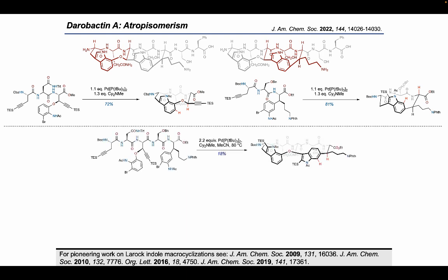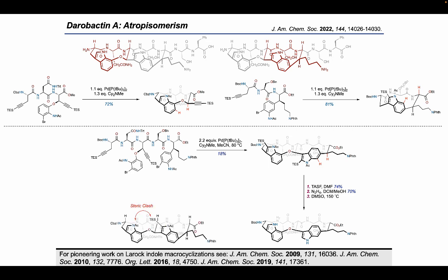Similarly, using the deshydroxytripeptide linear precursor, the eastern macrocycle was closed via LORAC-indole synthesis in excellent yield as a single atropisomer. In a more elaborate setting, we attempted to close both macrocycles in a single reaction. We were thrilled to isolate a bis-macrocyclic product in nearly 20% yield, but upon examination of the ROESY spectrum, we determined that the eastern macrocycle had been formed as the incorrect atropisomer. Deprotection of the indoles and heating in DMSO was unable to convert it to the correct atropisomer. Presumably, formation of the incorrect atropisomer results from steric clash between the western acetate and the eastern TBS group during closure of the eastern macrocycle.